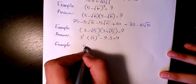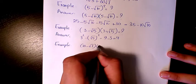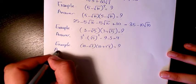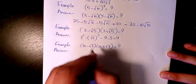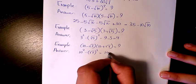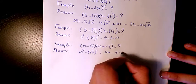Next example, we have (10 - √3) times (10 + √3). Answer is 10² minus √3² which is going to be 100 minus 3, which is 97.